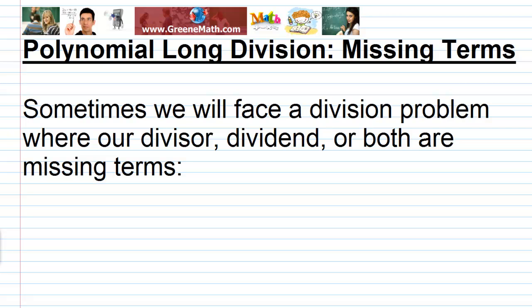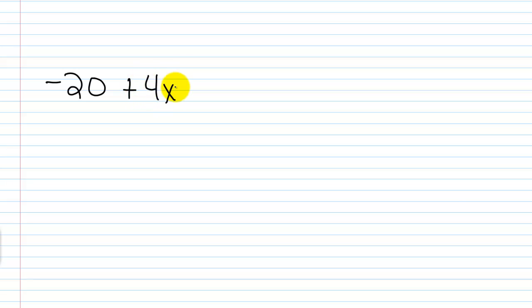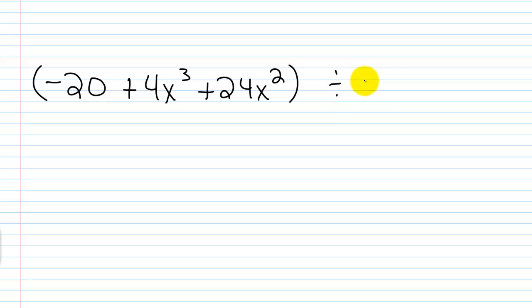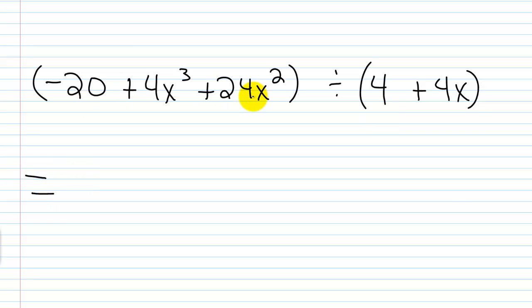Let me give you an example. Let's say that we had negative 20 plus 4x cubed plus 24x squared, and we want to divide this by 4 plus 4x. From previous videos on long division of polynomials, the first thing we want to do is write each polynomial in standard form. So for this first polynomial, I need 4x cubed out in front, then plus 24x squared, then minus 20.